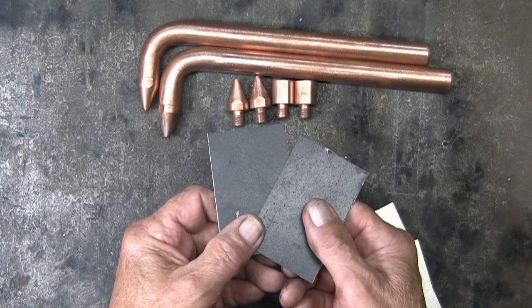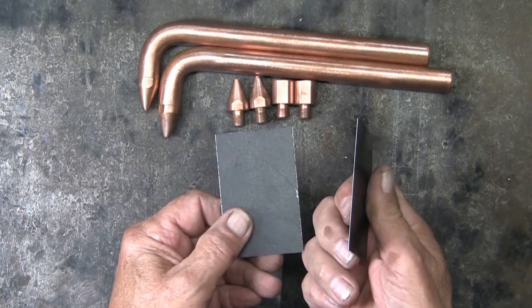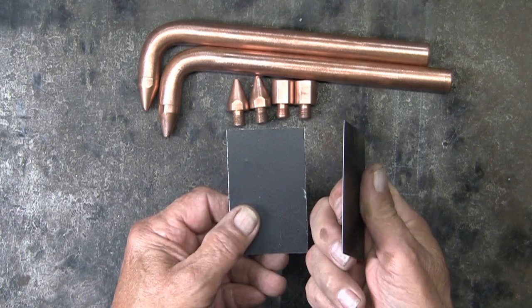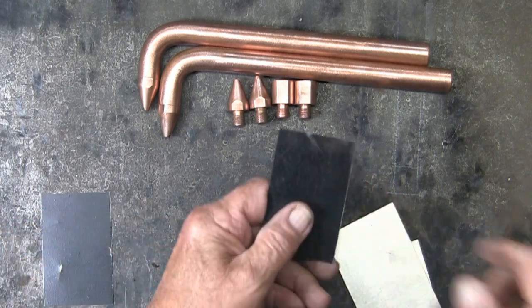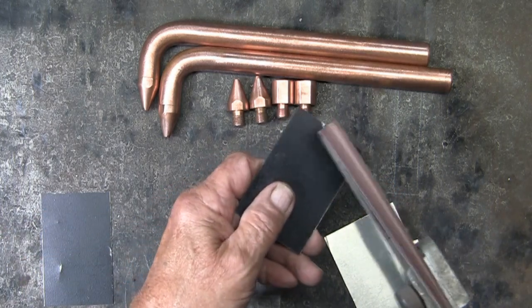Now this is two pieces of 24 gauge painted steel sheet metal. The paint must be removed for a good contact.